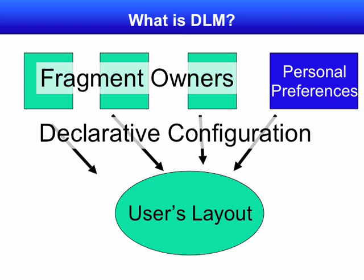So what is DLM? Various inputs — really two inputs — come together to form an end-user's layout. An end-user's layout consists of the fragments that come from fragment owners, mediated by declarative configuration of the audiences of these fragments: who it is that will be viewing particular fragments based on their group memberships, user attributes, or what have you.